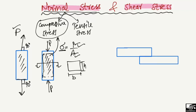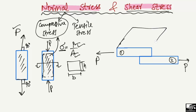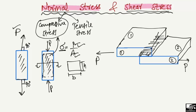Now the second type of stress is the shear stress. If I consider this is object one and this is object two, and if I apply a tension load P here — drawing this in more detail — this is my second object and this is my first object. Under the application of the tensile load, the area which is being shared by the two objects is the area where shear stress develops.